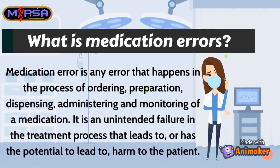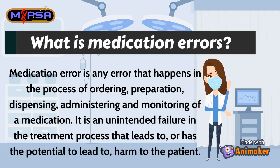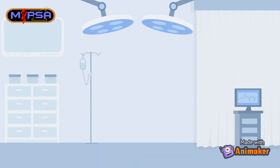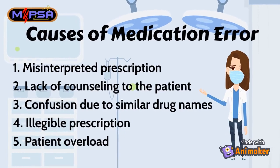What is a medication error? A medication error is any error that happens in the process of ordering, preparation, dispensing, administering, and monitoring of a medication. It is an unintended failure in the treatment process that leads to, or has the potential to lead to, harm to the patient.